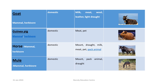Guinea pig: mammal, herbivore; domestic. Commercially used for meat and kept as a pet. Horse: mammal, herbivore; domestic. Commercially used for mount, draught, milk, meat, pet, and pack animal.